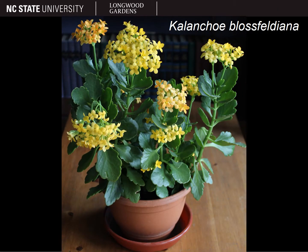We'll start with some plants in the main kalanchoe group. Most that are commonly grown as house plants or in containers are upright perennials, like Kalanchoe blossfeldiana, also known as the florist's kalanchoe. This is the one that many of you are probably familiar with, and is commonly sold at grocery stores or in big box stores like Lowe's or Home Depot. Kalanchoe blossfeldiana has simple, opposite to sub-opposite leaves that are ovate and glabrous and have a crenate, or scalloped, margin.